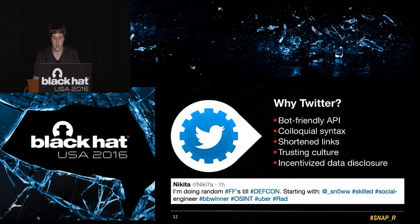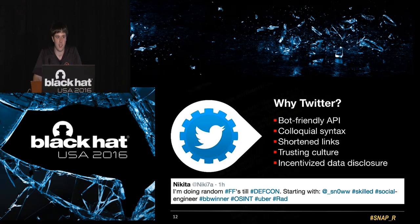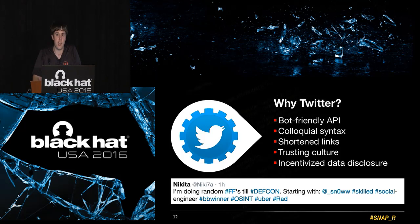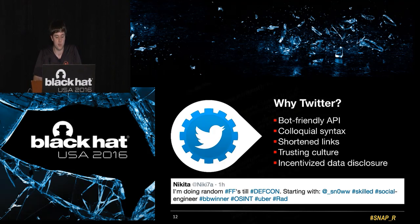Why is social media and Twitter specifically a good venue for spearfishing, especially autonomously? There are quite a few reasons why social networks are different from standard email. First, there's a very good API for scraping data off of Twitter. Anything you post — hashtags, posts, statuses, timestamps — can be collected very easily. This is generalized across most social networks. There's also a very colloquial syntax on Twitter; perfect grammar isn't really the norm, so machine learning models that are imperfect can still act on par with normal users.